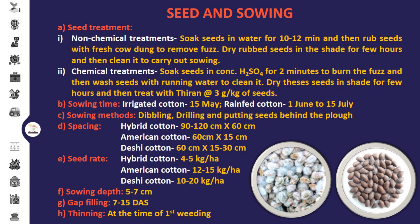In case of seed treatment, for non-chemical seed treatment, soak the seeds of cotton in water for 10 to 12 minutes, then rub seeds with fresh cow dung to remove fuzz. Dry these rubbed seeds in the shade for a few hours and then clean before sowing. For chemical treatment, soak seeds in concentrated H2SO4 for 2 minutes to burn the fuzz, then wash seeds with running water, dry in shade for a few hours, and treat with thiram at the rate of 3 gram per kg of seeds.